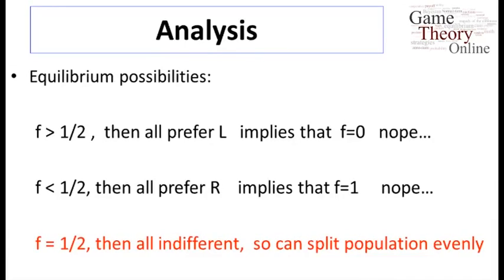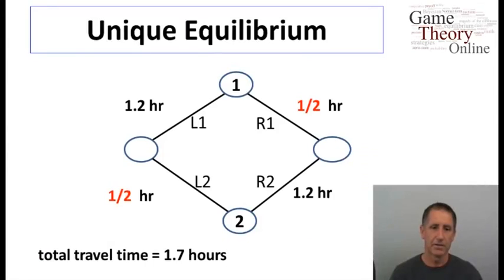Let's think of three different possibilities, corresponding to what fraction of players are going right. If strictly greater than half the players are going right, then as we've just seen, going left is the unique best response. Well, that means that no one is going right, inconsistent with the assumption that at least half are going right. So this is an inconsistent situation. By similar analysis, you can show that it can't be that strictly less than half are going right. Well, that means the only possibility is that we split the traffic, that exactly half are going left and half are going right. And this is indeed the unique equilibrium.